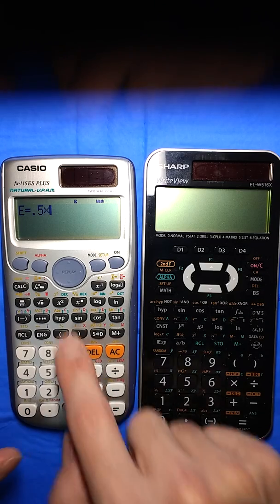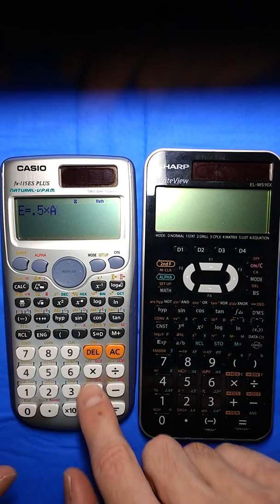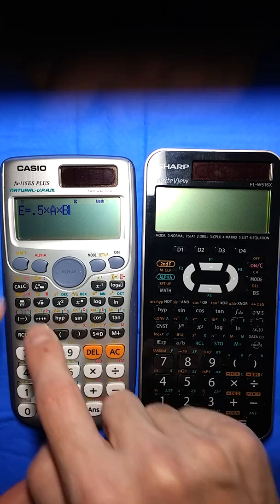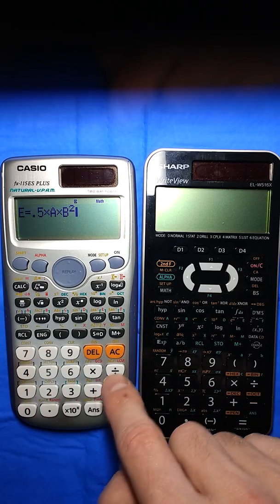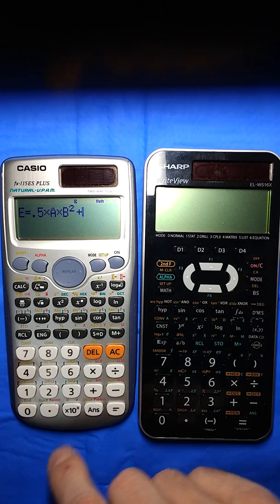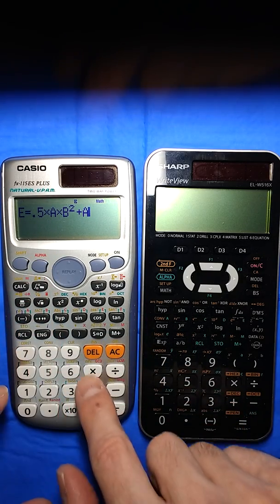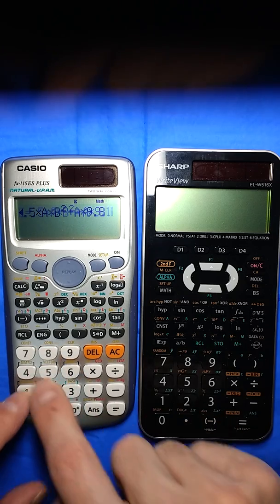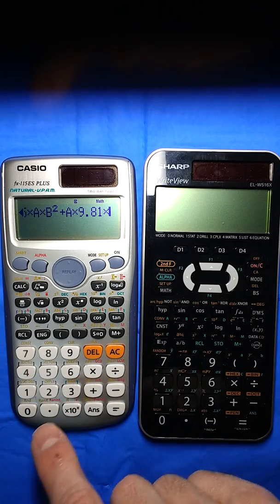So I'm doing 1 half times the mass, which I'll use A, times the velocity, and I'll call B. That's 1 half mv squared, so that's my kinetic. And then my mass, again, is A times my gravity.